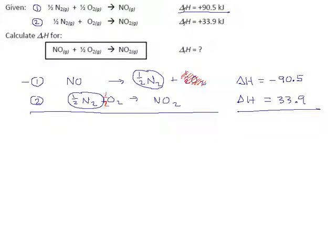So it did work out. We have NO on the left, and we have half an oxygen molecule. And that converts to nitrogen dioxide.